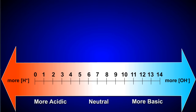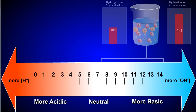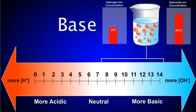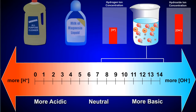When a substance has a pH of greater than 7, it's classified as a base and releases a greater concentration of hydroxide ions. The more hydroxide ions that are released, the more basic the substance is. Bases tend to feel slippery and are often used as household cleaners. Milk of magnesia and ammonia are both common bases.